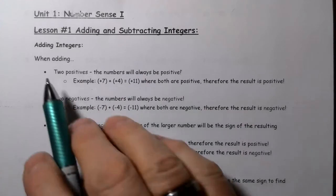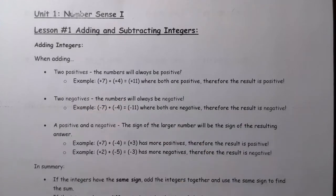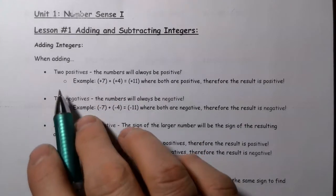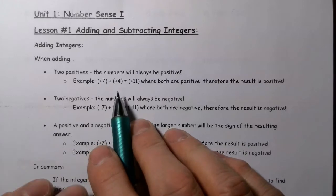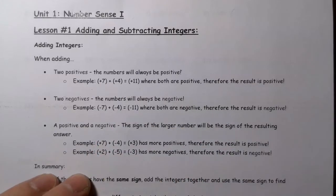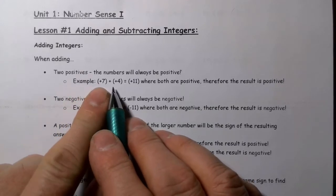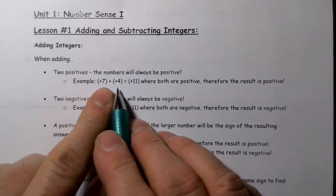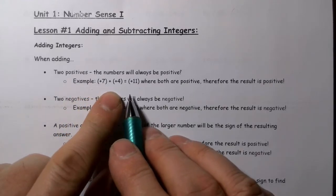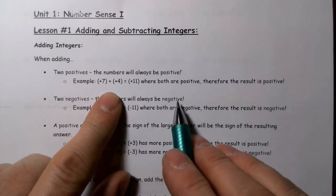When we're adding integers, if you've got two positives, then the final answer is going to be positive. Your result will be positive. So for example, if you have positive seven and you add positive four, the result is going to be positive 11.